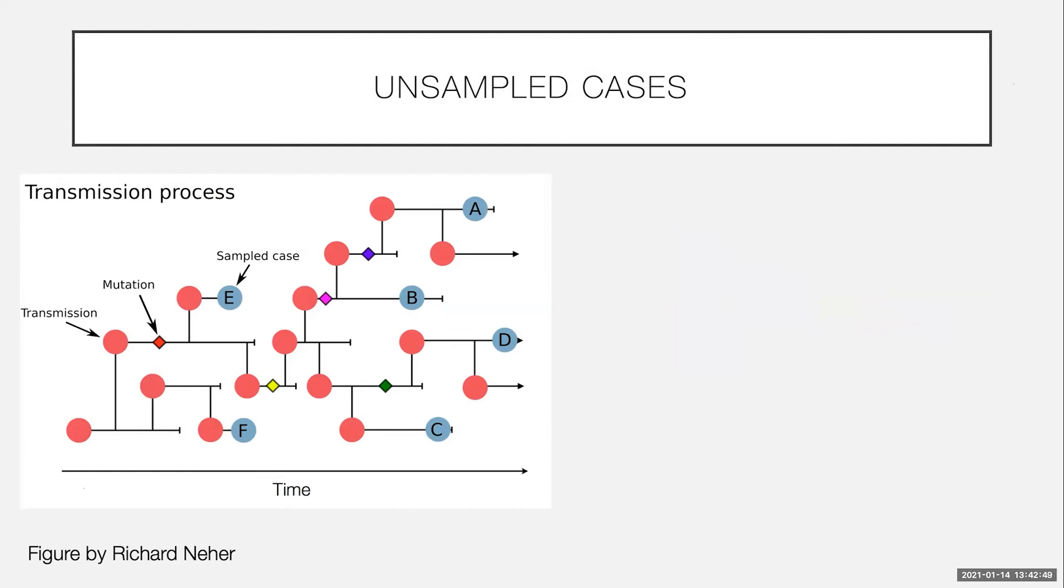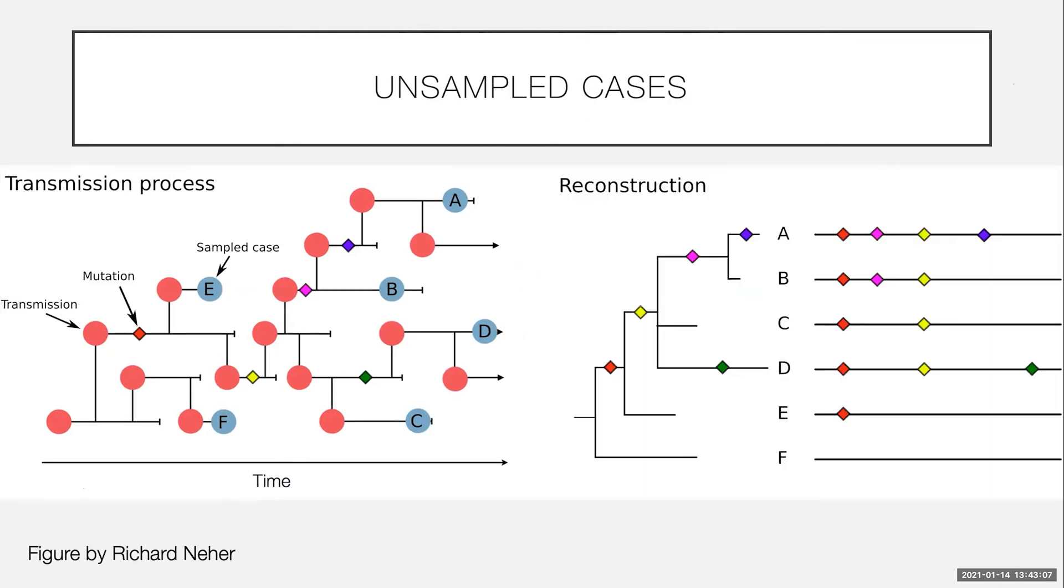And this is what a more realistic scenario would look like. So we have our sampled cases in blue. We have mutations shown as diamonds. And we have red circles as transmission events. And you can see that we don't sample very many of the transmission events. So when we actually build our phylogeny, we're missing a lot of information about how people actually transmit to each other.